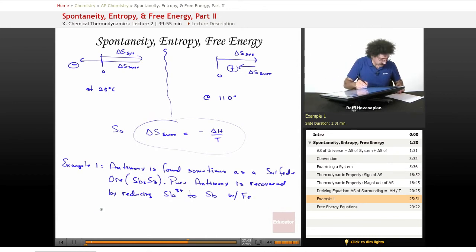Here's the reaction. Sb2S3 plus three moles of iron atoms produces two moles of pure antimony metal, plus iron sulfide, FeS.